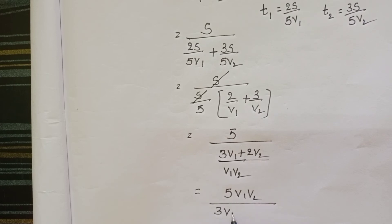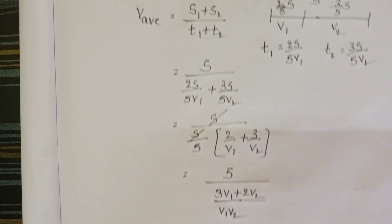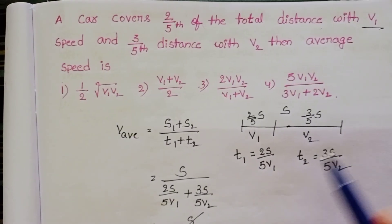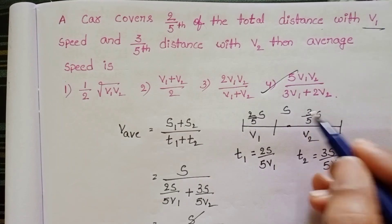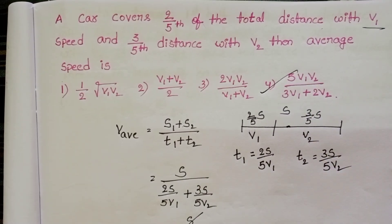Check the given options. Average speed 5V1V2 by 3V1 plus 2V2. Fourth option is correct.